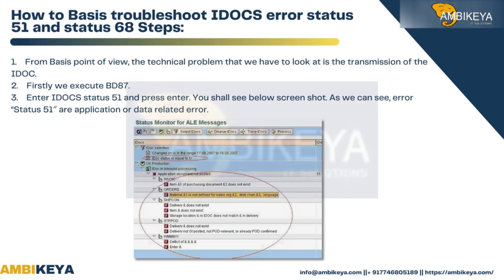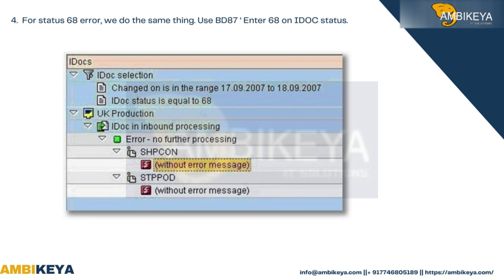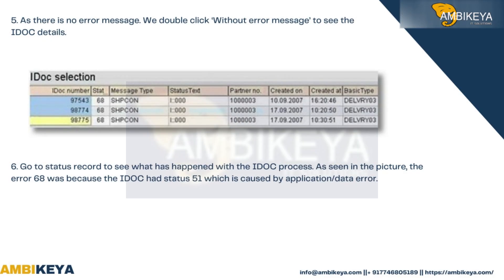From a basis troubleshooting point of view, the technical problem to look at is the transmission of the IDoc. First, execute BD87 for error status 51, which is an application or data-related error. For status 68 errors, do the same — use BD87, enter 68 on the IDoc status field.